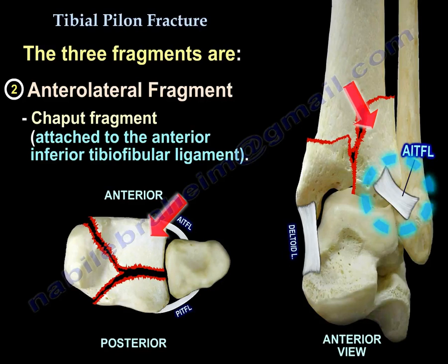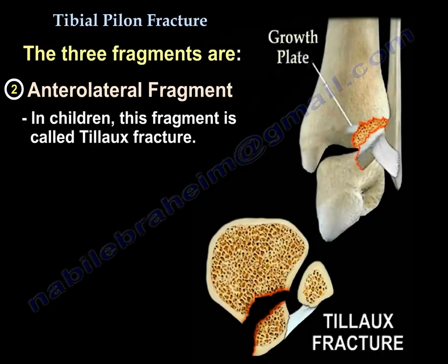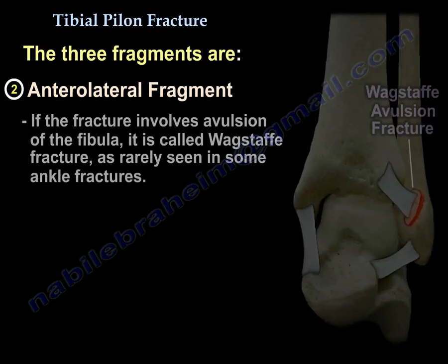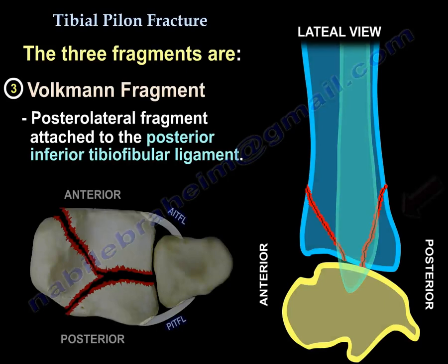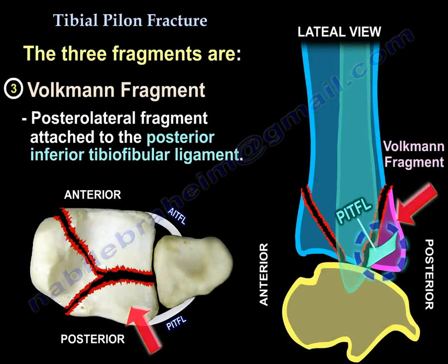The Chaput fragment is attached to the anterior inferior tibiofibular ligament. In children, it is called the Tillaux fracture, and if the fracture involves avulsion of the fibula, it is called a Wagstaffe fracture. The Volkmann fragment is the posterolateral fragment, and it is attached to the posterior inferior tibiofibular ligament.